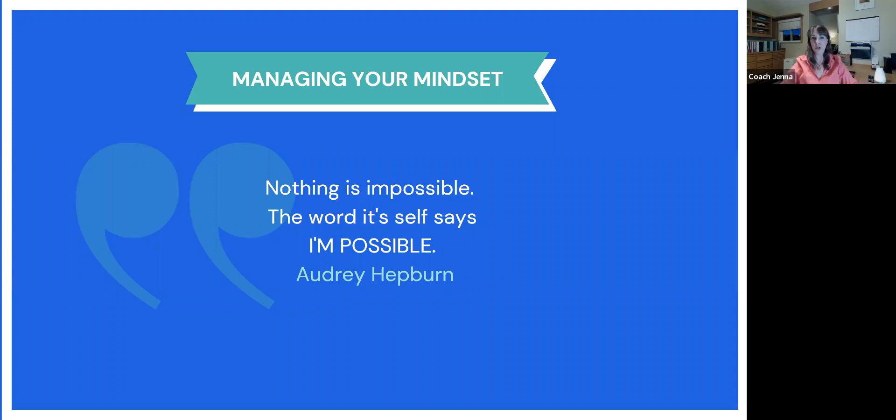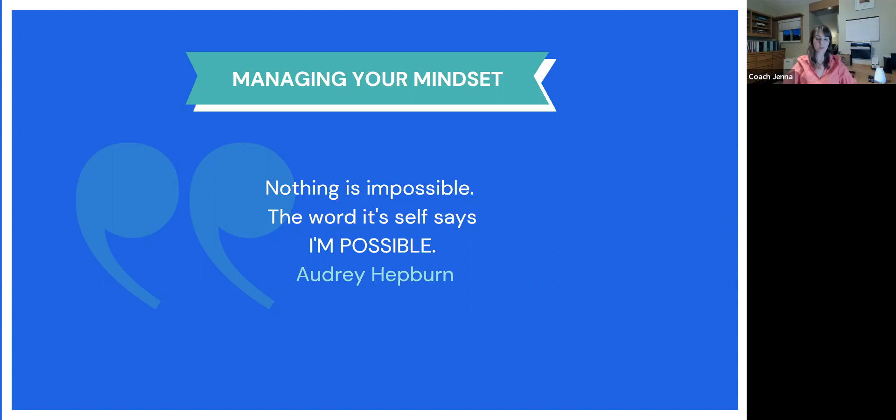And so managing your mind is absolutely critical work if you want to be a successful entrepreneur. And I just love this quote from Audrey Hepburn: nothing is impossible. The word itself says I'm possible. So let's talk for a minute about your reptilian brain. This is the part of your brain that is in control of our innate and automatic self-preserving behavior patterns, which ensure our survival and that of our species. They control our body's vital functions like heart rate, breathing, body temperature, and balance.